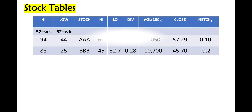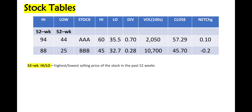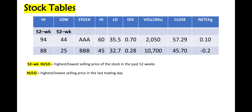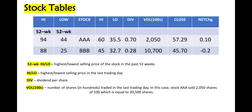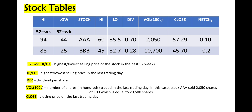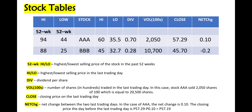As an example of a stock table, we have here a table for 52 weeks. We have the highest and lowest selling price of the stocks in the past 52 weeks. Then we also have the stock, and the highest and lowest selling price in the last trading day. Then we have the dividend, the volume by hundreds, and the closing price on the last trading day.